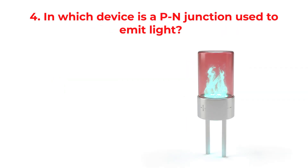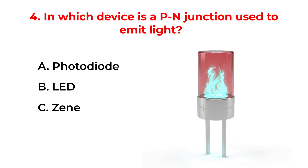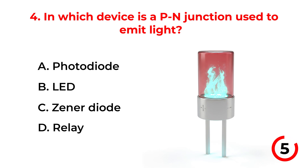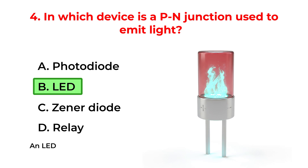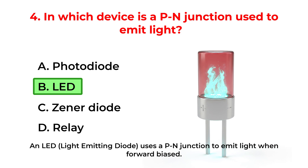In which device is a P-N junction used to emit light? A. Photodiode. B. LED. C. Zener diode. D. Relay. The correct answer is Option B: LED. An LED (light emitting diode) uses a P-N junction to emit light when forward biased.